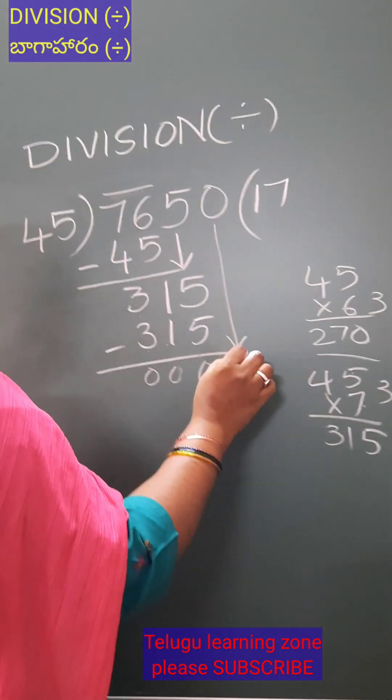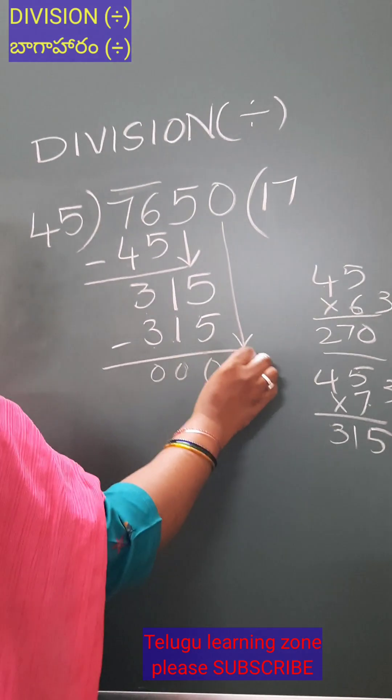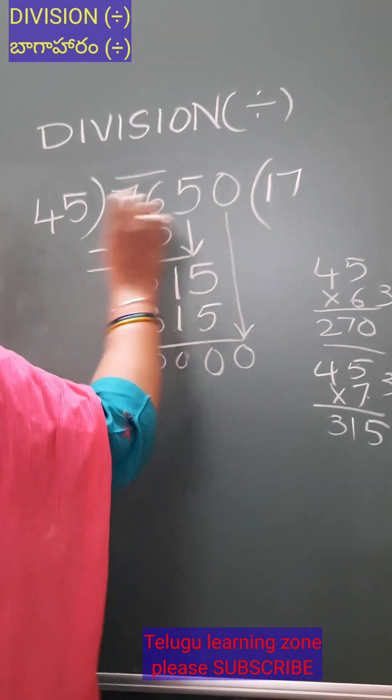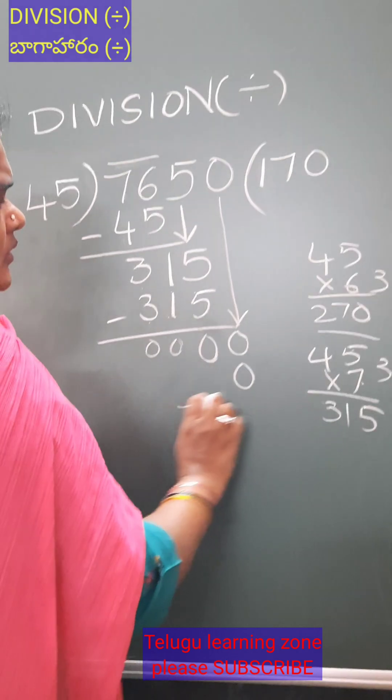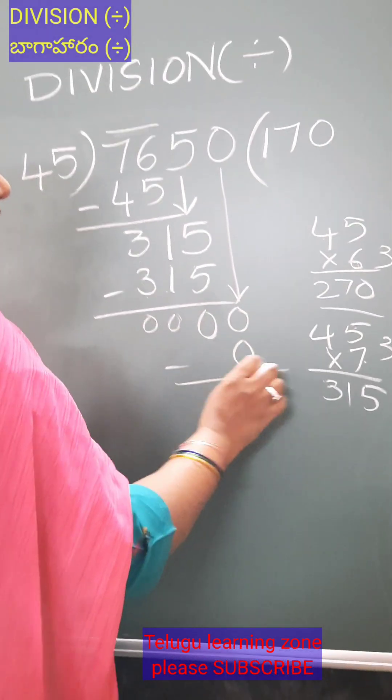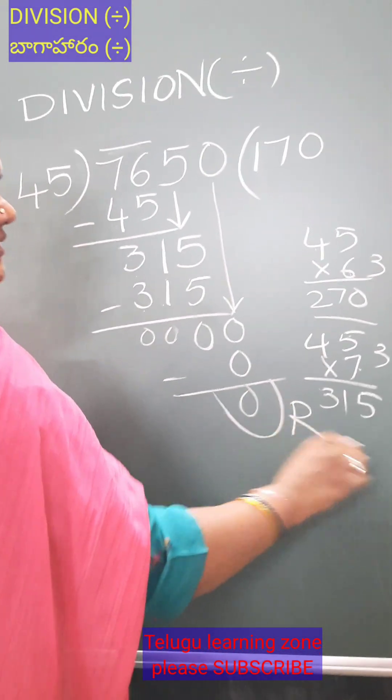Now take down the last digit, 0. In 45, 45 zeros are 0. Subtract: 0 minus 0 is 0. 0 is the remainder.